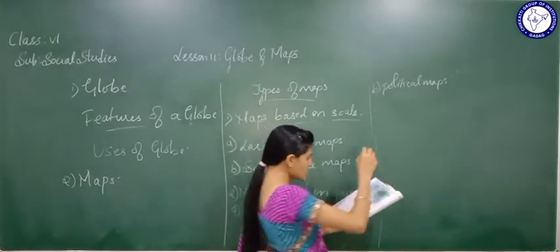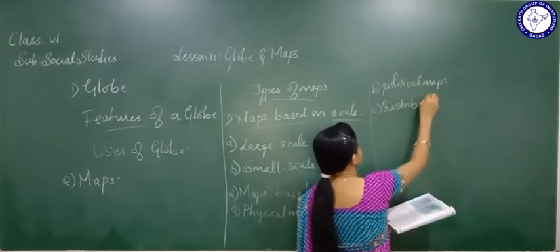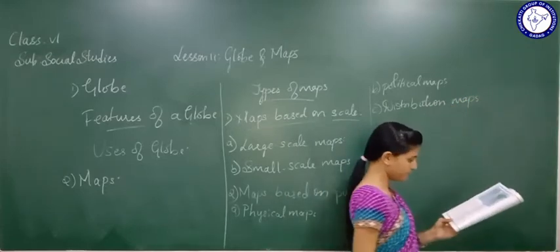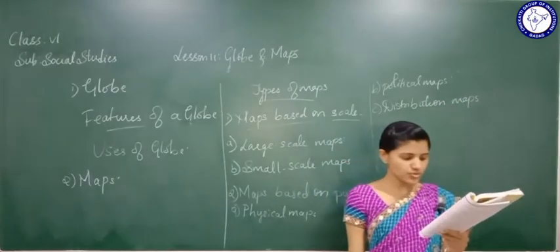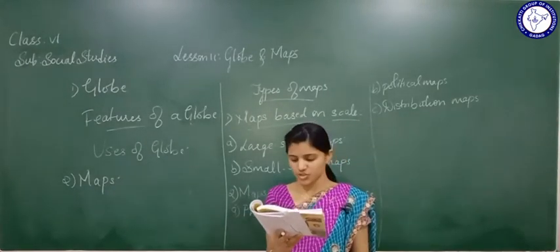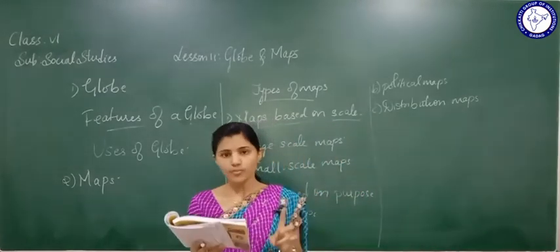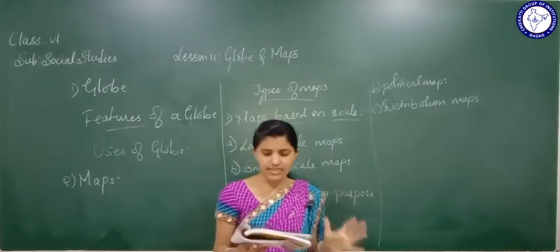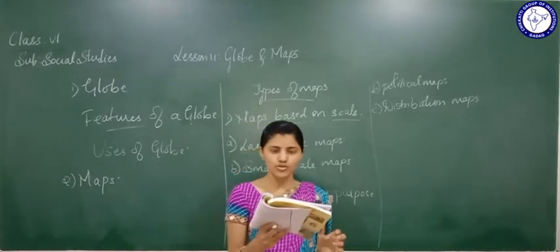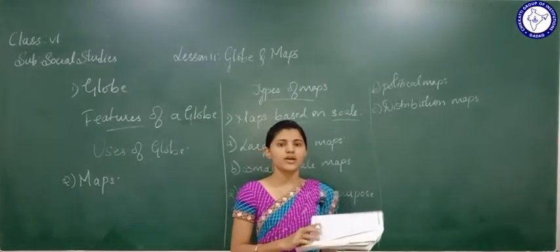Next come distribution maps. These maps are used to show the distribution of definite features. Particular features shown in distribution maps include land use, temperature, rainfall, population, soils, natural vegetation, crops, minerals, industries, railways, roads, waterways, etc.